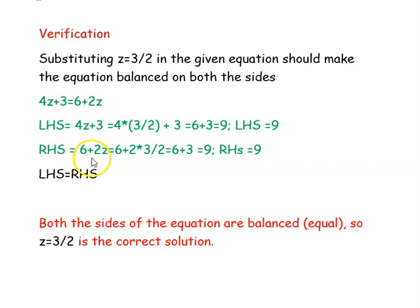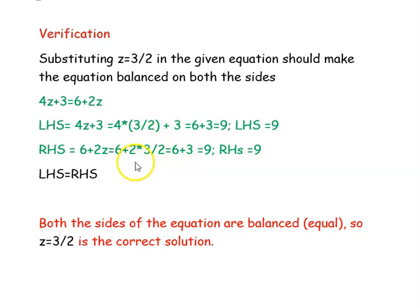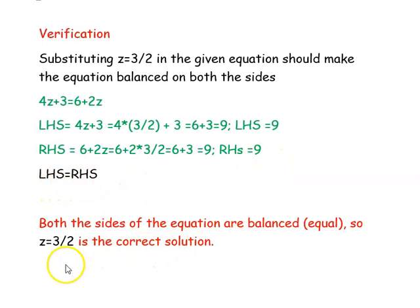Our right hand side is 6 plus 2z. Substituting z as 3 by 2: 6 plus 2 into 3 by 2. The 2s cancel, giving 6 plus 3 equal to 9. So our right hand side is also 9. Left hand side equals right hand side, so the equation is balanced and z equal to 3 by 2 is the correct solution.